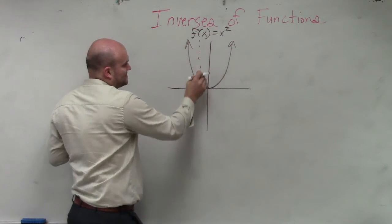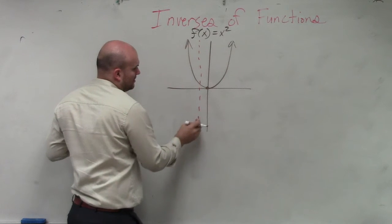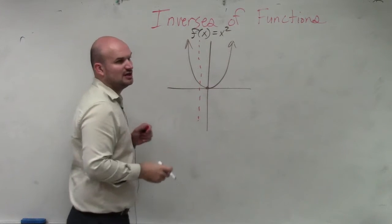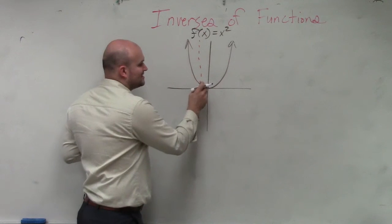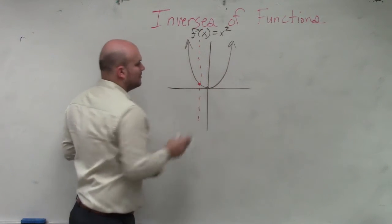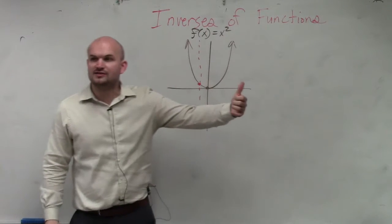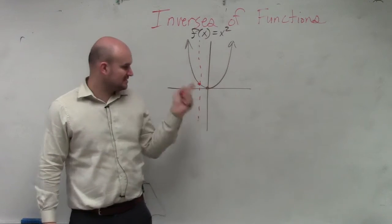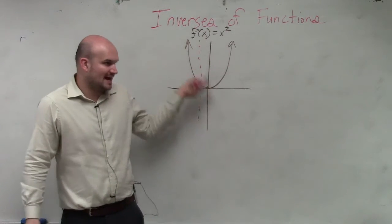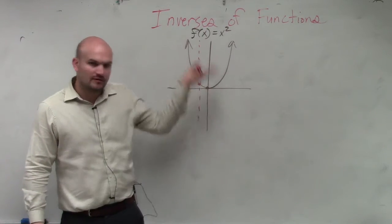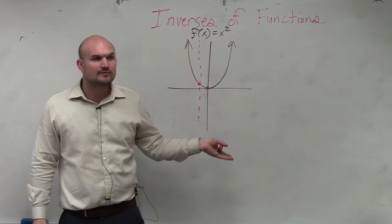Because if you were to test to see if it's a function by creating a vertical line, as long as a vertical line can only cross the function once, that's saying there's only one x value for every y value, correct?